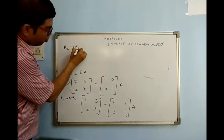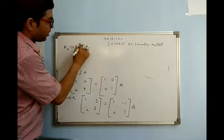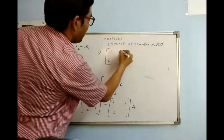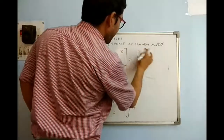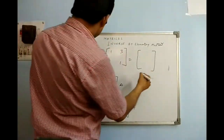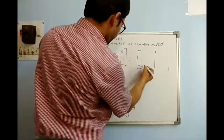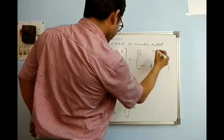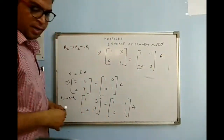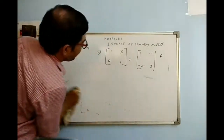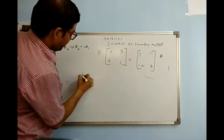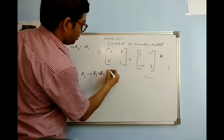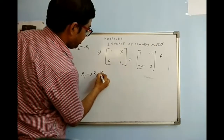Now I have to bring a 0 here. At R2 I go for R2 minus 2·R1. This is remaining [1, 3] and same way we make changes at R2: this is [0, 1] and this is [−2, 3; 1, −1]·A. So almost we got it, but this 3 has to be made 0. This can be done if at R1 I write R1 minus 3·R2.